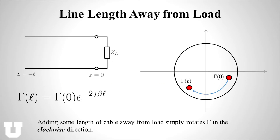Now let's take another scenario we talked about in one of our previous lectures: a load with some fixed line length away from it. What does that do to my reflection coefficient? We already did the derivation, and all that happens is it adds a phase shift to my reflection coefficient. In particular, it's two times the electrical length, because the wave has to go down to strike the load and then come back again, so it traverses that length L twice. In terms of the Smith chart, you can just imagine this little phase shift being added to my complex value, which simply corresponds to a rotation in the complex plane in the clockwise direction with an angular rotation of exactly two times beta L. The behavior visually is just a simple rotation of that dot.